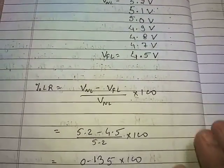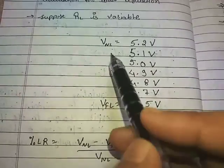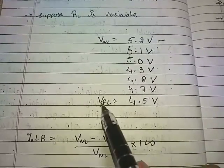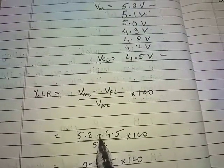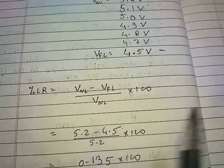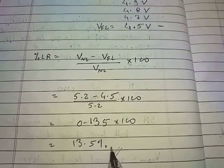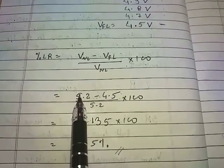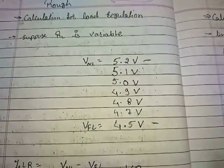So how do we calculate the percentage LR or load regulation? The formula is: percentage LR = (VNL − VFL) / VNL × 100. With no load I got 5.2 volts and at maximum load I got 4.5 volts. So: (5.2 − 4.5) / 5.2 × 100 = 0.135 × 100 = 13.5%. This is my percentage load regulation. The load regulation value alone is 0.7 volts.